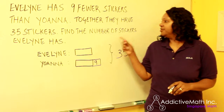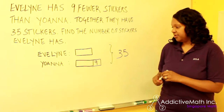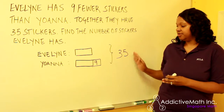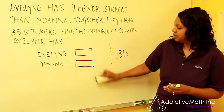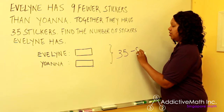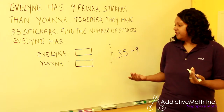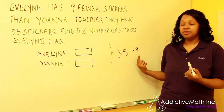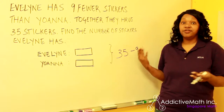Next, we need to find the number of stickers Evelyn has. So to do that, we're going to have to get rid of this nine and put it over here. So we're going to have to subtract 35 minus nine. Of course, we would encourage you to do this in your head. Now, if you don't know what 35 minus nine is, remember you can always break this nine down into five and four.